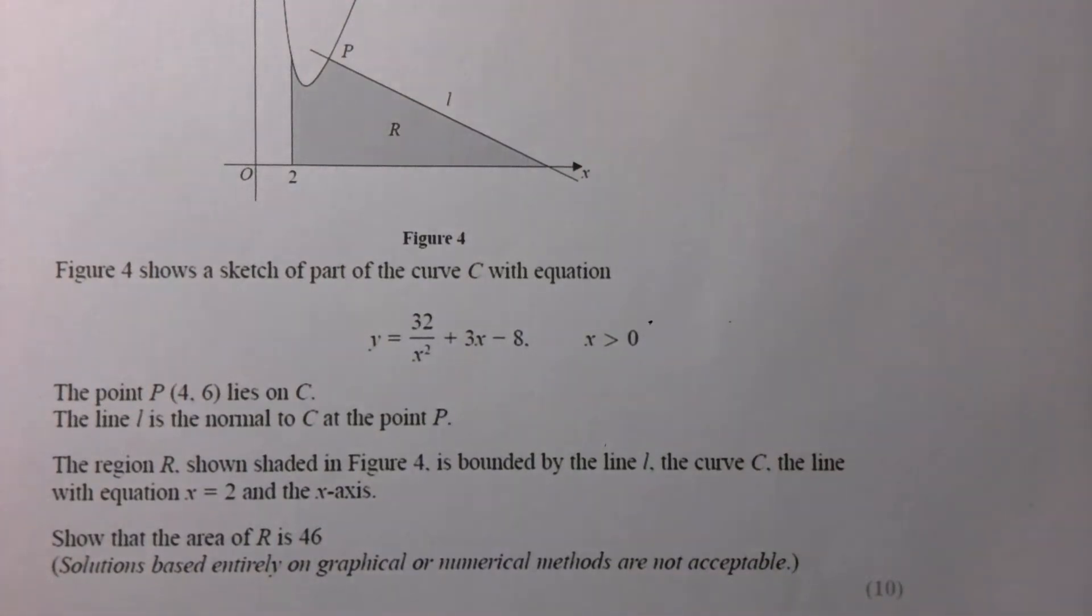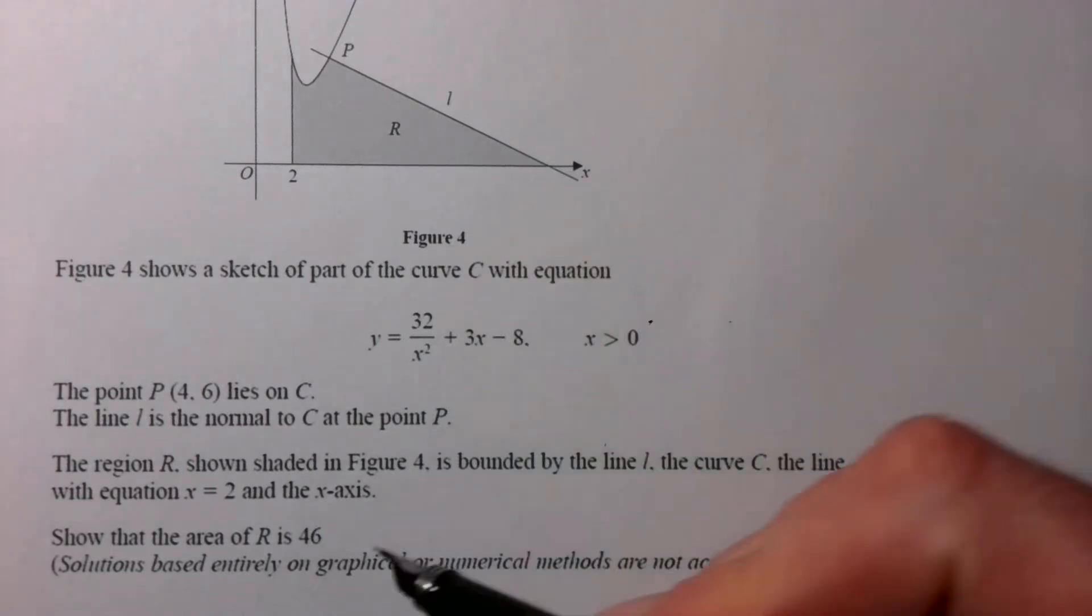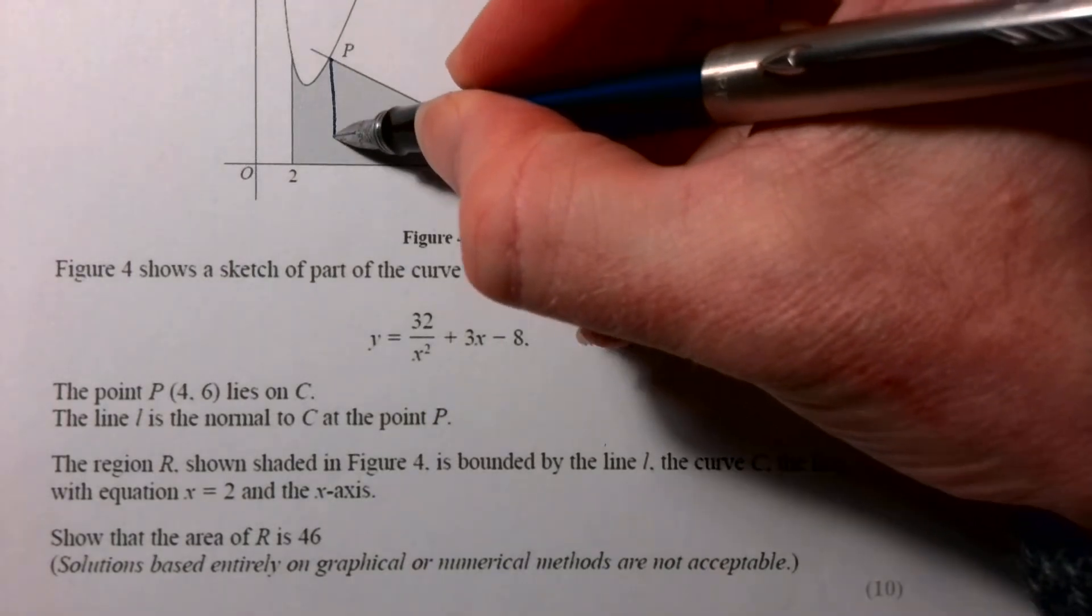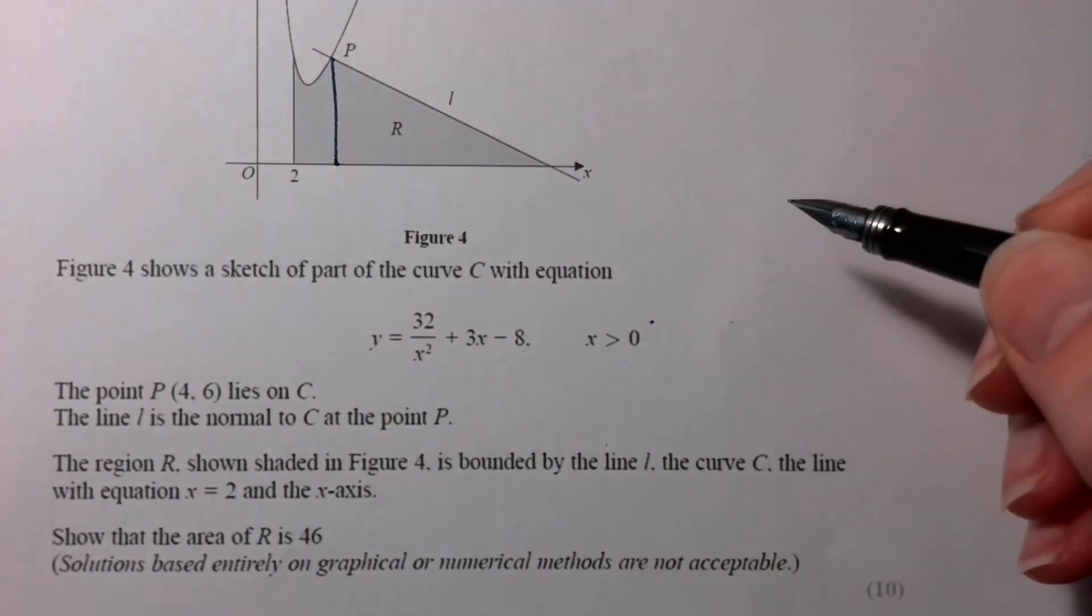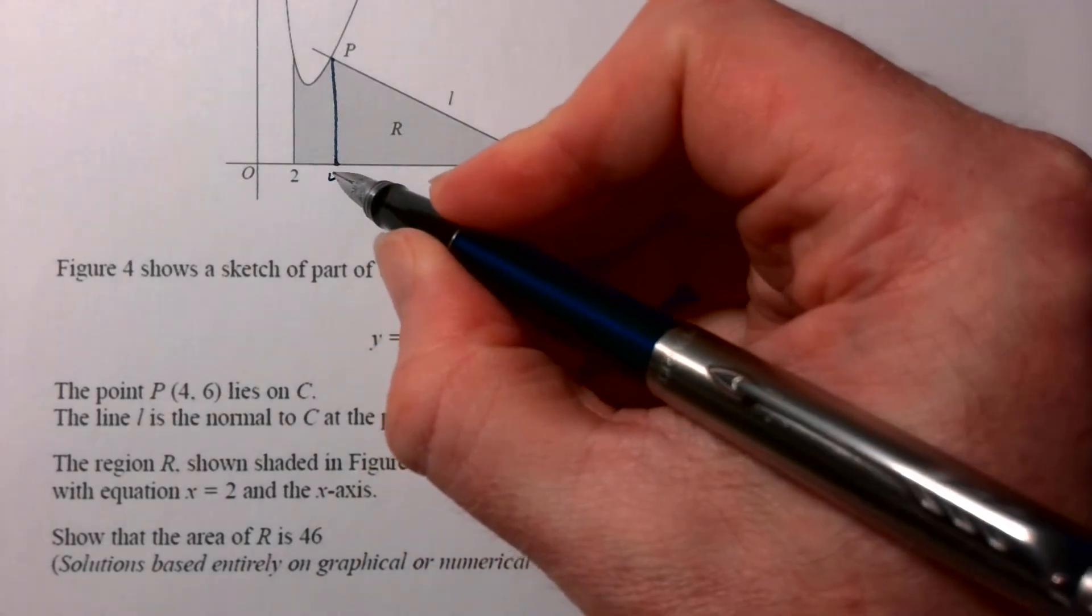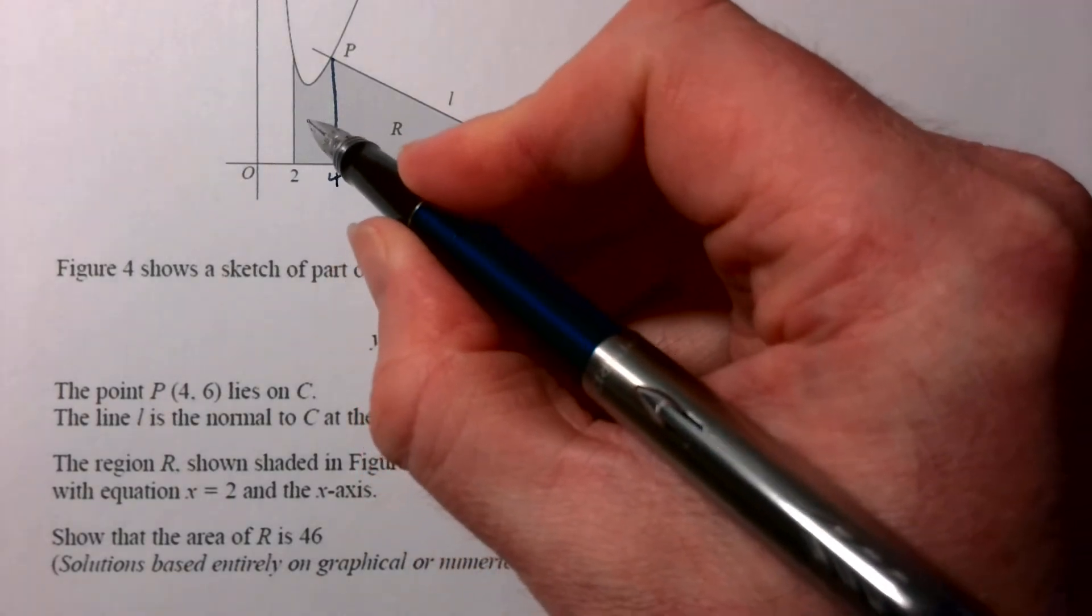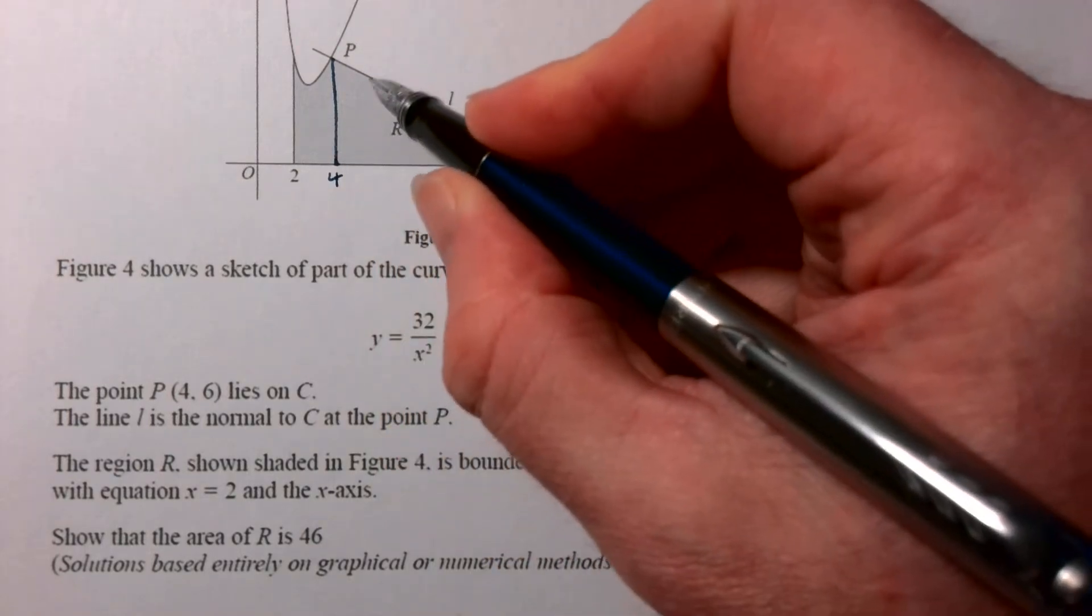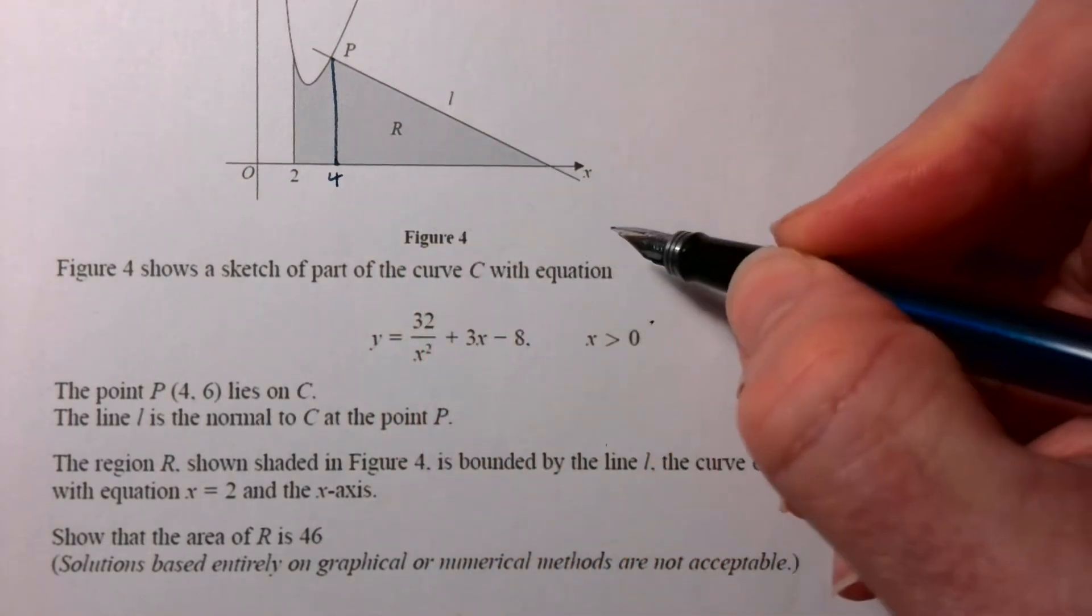Right then, the final question. It's integration but it's also a bit of differentiation, because to find the area under this curve, we're going to need to split this into two. So we've got this bit here, now we can use definite integration to find that area there, but this area here is just simply a triangle.